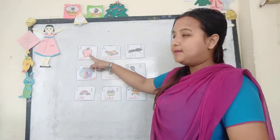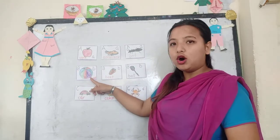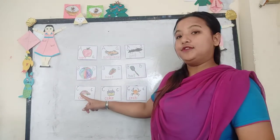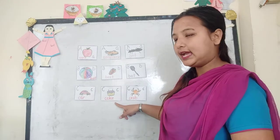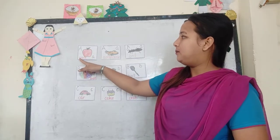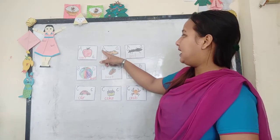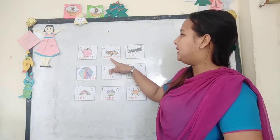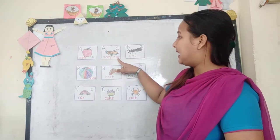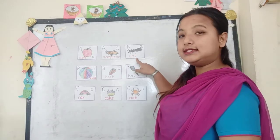A is for apple. A-P-P-L-E, apple. A-P-P-L-E, apple. A is for aeroplane. A-E-R-O-P-L-A-N-E, aeroplane. A-E-R-O-P-L-A-N-E, aeroplane. A is for ant. A-N-T, ant. A-N-T, ant.